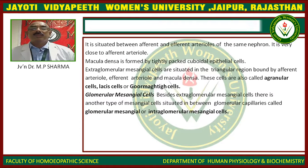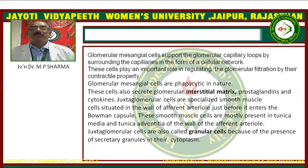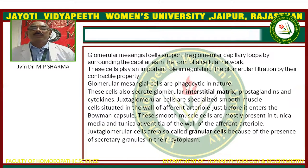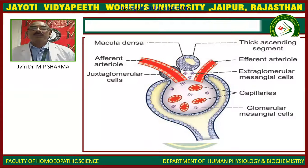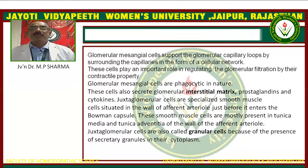There is another type of mesangial cell situated between the glomerular capillaries called glomerular or intraglomerular mesangial cells. These cells support the glomerular capillary loop by surrounding it in the form of a cellular network and play an important role in regulating glomerular filtration by their contractile property. These cells are phagocytic in nature and also secrete glomerular interstitial matrix, prostaglandins, and cytokines.